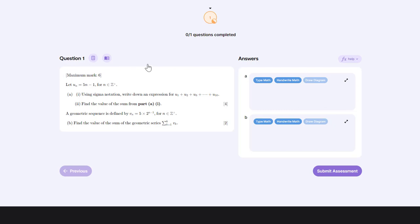To look at this we're going to use this question here which is a sequence and series question, but we're just going to look at part B. In part B we have a geometric sequence which is defined by this general term: 5 times 2 to the power of n minus 1.